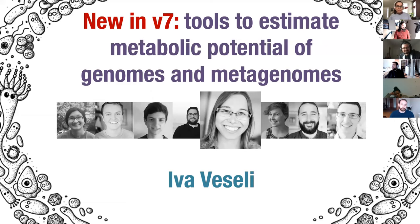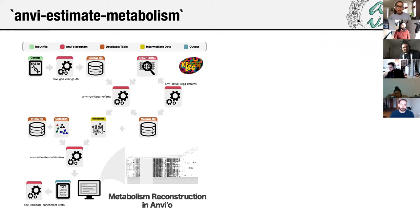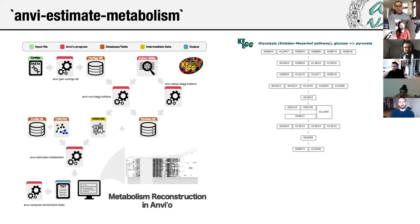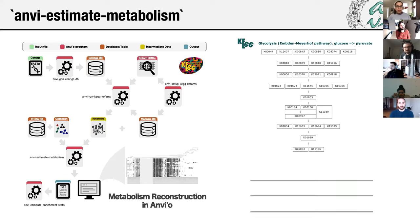Next we have Eva. I'm a third year grad student in the Marin Lab, and for AMVIO V7 I worked mostly on a suite of programs for estimating metabolic potential in genomes and metagenomes. The purpose of these programs is to add more context to gene annotations by linking them to known metabolic pathways. For now, we're using the KEGG databases to provide definitions of well-known metabolic pathways, and KEGG also provides a set of HMM profiles called KOfams with which you can annotate your genes.